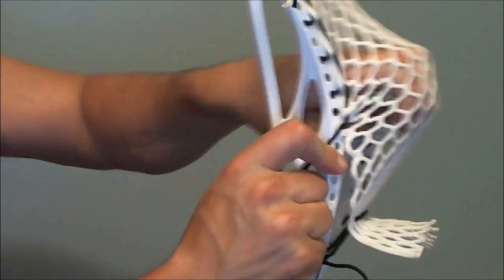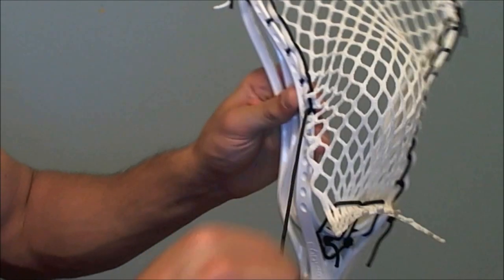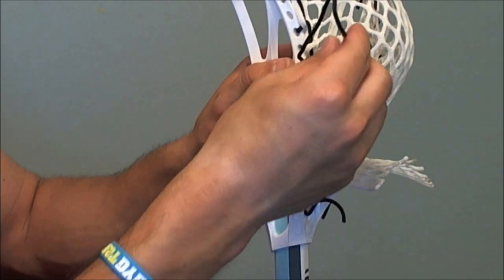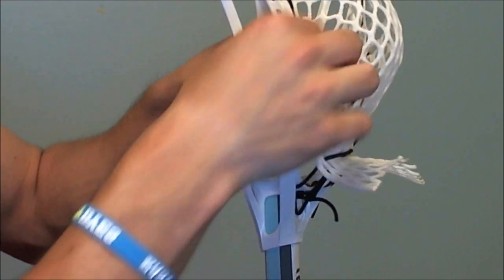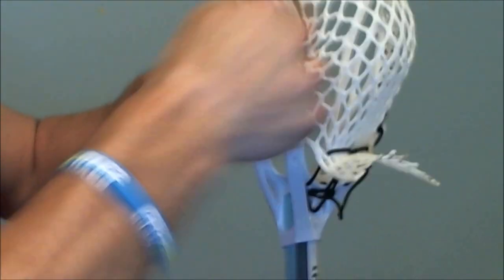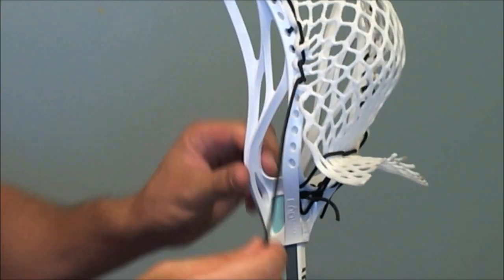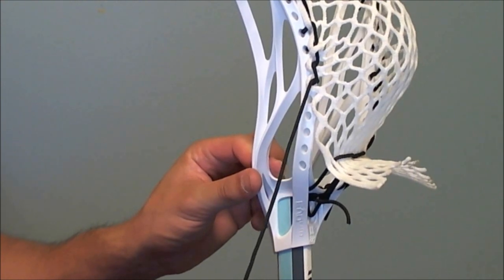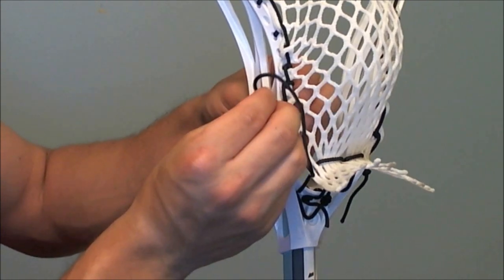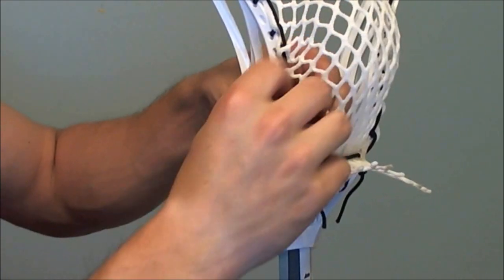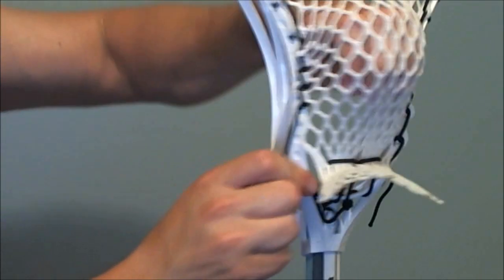Then we're going to do another SI right in the next little mesh, in the next sidewall hole. Continue a little bit of that bunching. Then we're going to do another SI on the next sidewall hole. Just like that.